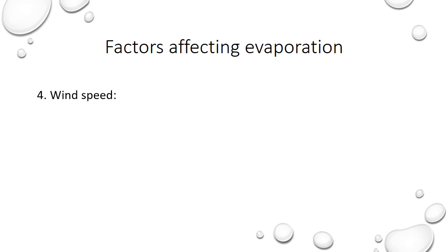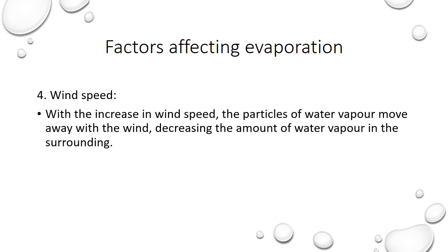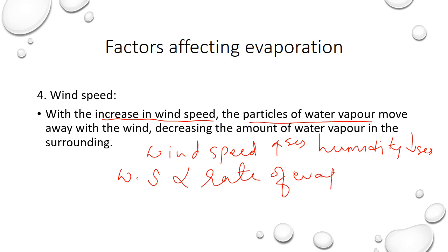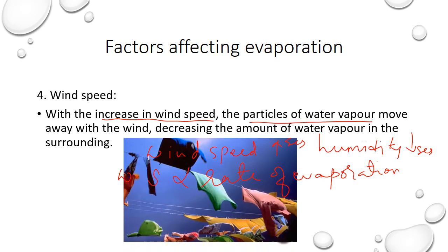The last factor is wind speed. Wind speed and humidity are related. If wind speed increases, humidity decreases because the wind carries away the particles of water vapor with it. So when wind speed increases, humidity decreases, which means the rate of evaporation will increase. Wind speed is directly proportional to the rate of evaporation. Taking the same example, clothes dry faster on a windy day.